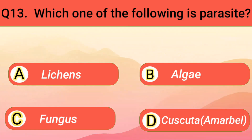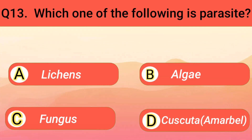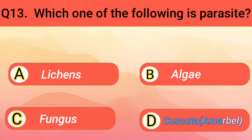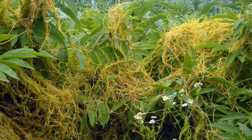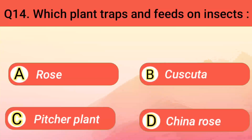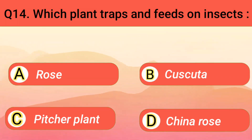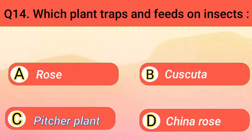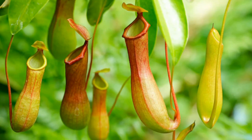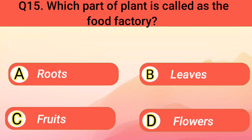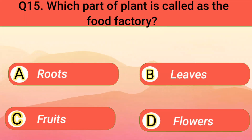Which one of the following is a parasite? Cuscuta. Which plant traps and feeds on insects? Pitcher plant. Which part of the plant is called the food factory? Leaves.